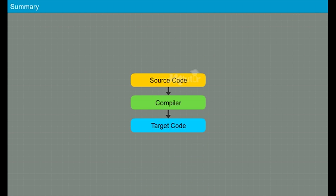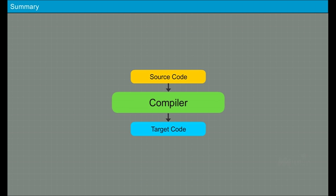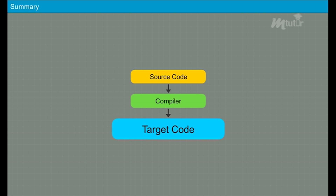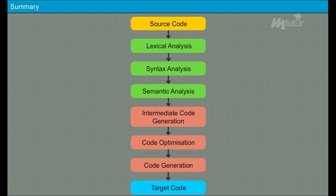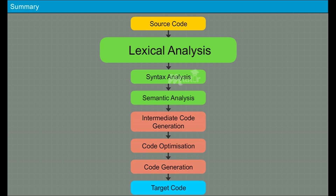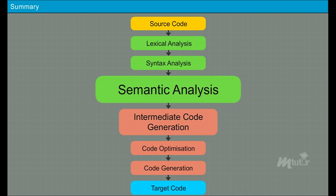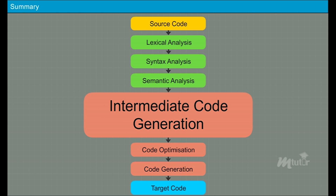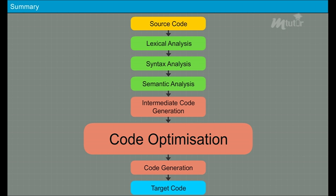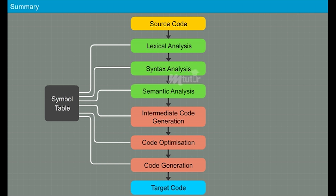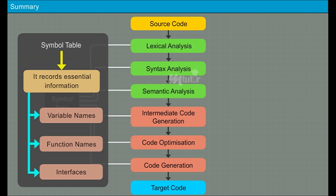In summary, a compiler converts the source program into its equivalent machine code. The phases of a compiler are: lexical analysis, syntax analysis, semantic analysis, intermediate code generation, code optimization, and code generation. The symbol table is the data structure used to record information such as variable names, function names, and interfaces.